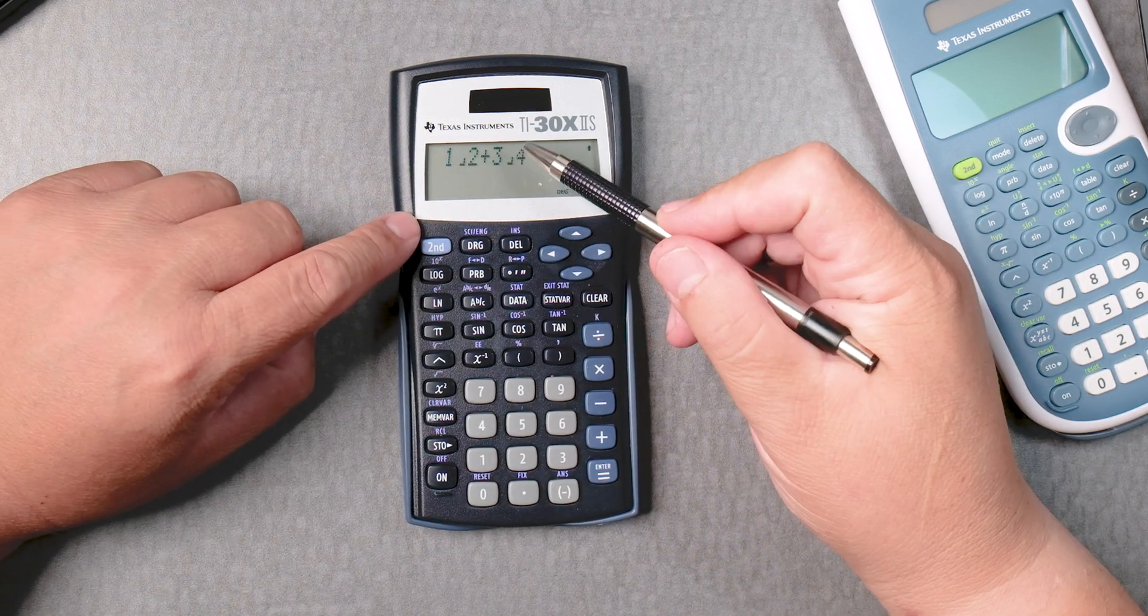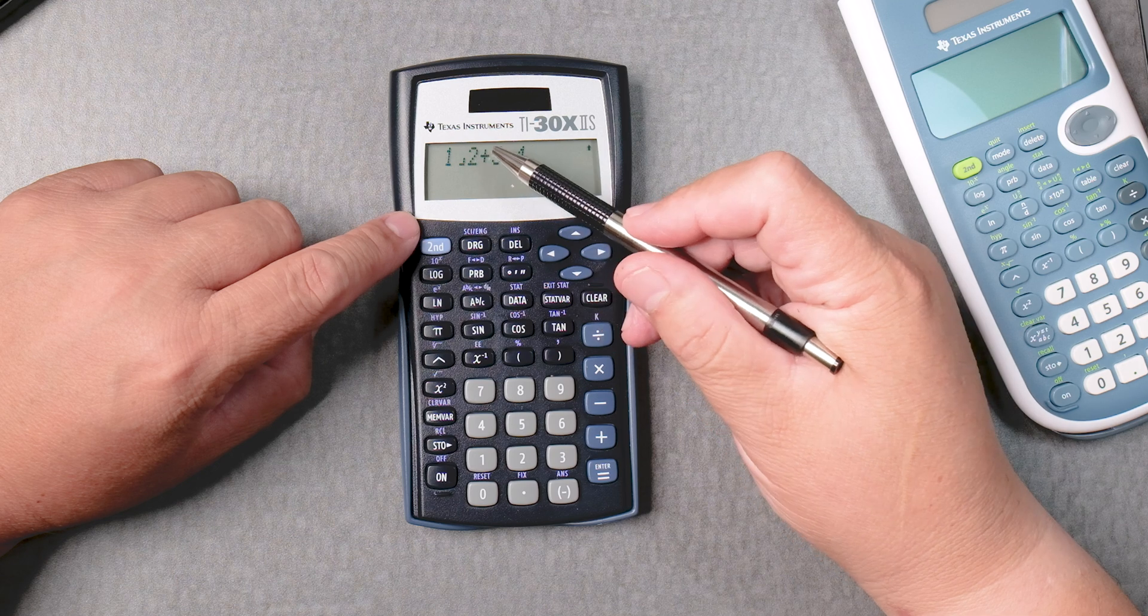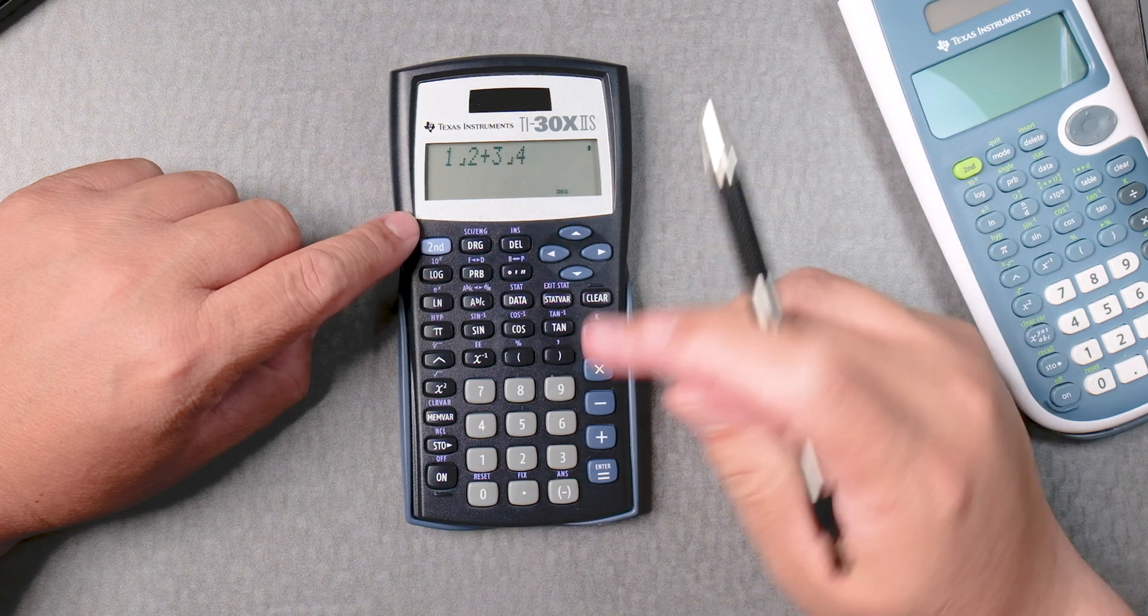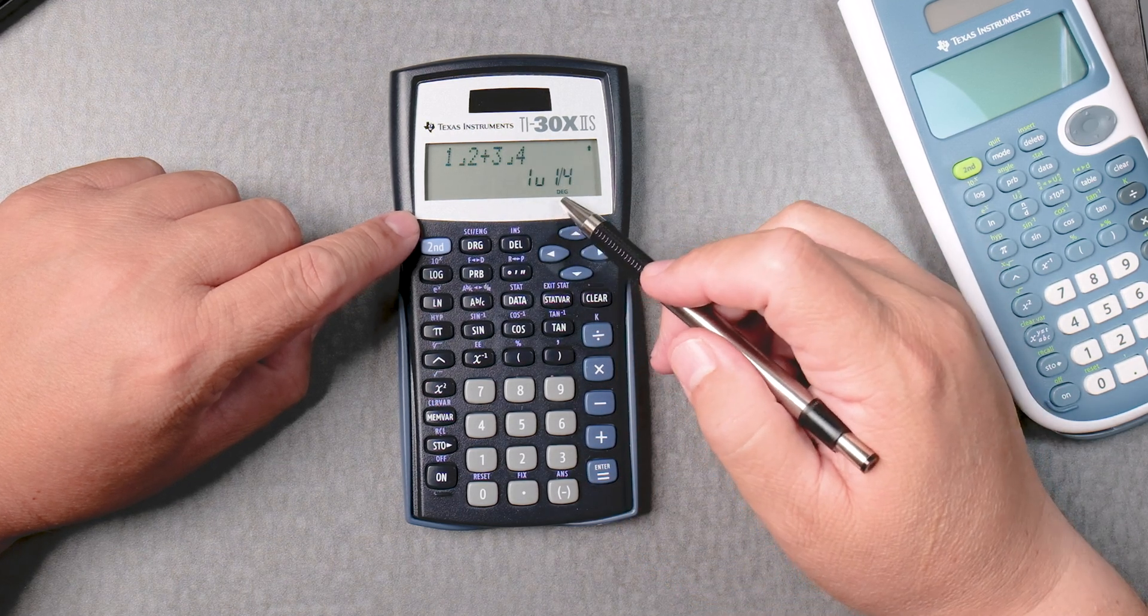It knows that this is a fraction, that's a fraction, that this 2 plus three-fourths is not together. We enter, it's going to give you 1 and one-fourth.